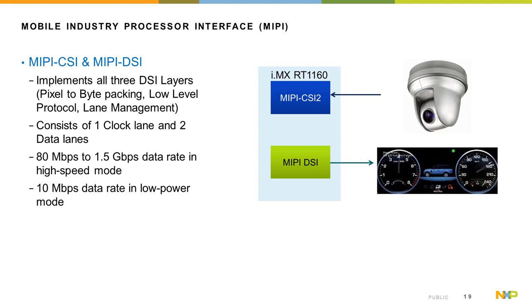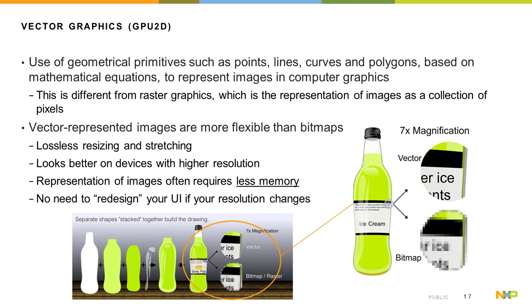The RT1170 also includes vector graphics support through the 2D GPU. This 2D GPU uses geometrical primitives such as points, lines, curves, and polygons based on mathematical equations to represent images in computer graphics. This is different from raster graphics, which is a representation of images as a collection of pixels, whereas vector represented images are more flexible than bitmaps, so we can have lossless resizing and stretching. It also looks better on devices with higher resolution and often requires less memory. Most importantly, there is no need to redesign your UI if your resolution changes.